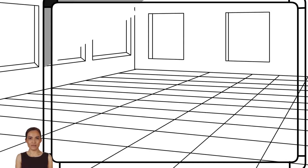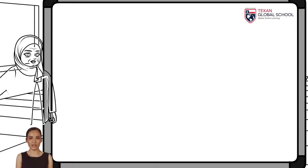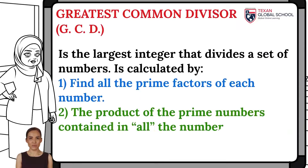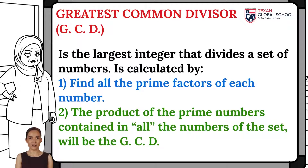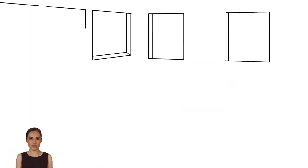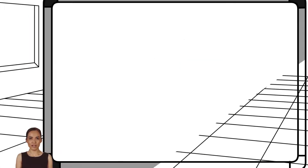The greatest common divisor is the largest integer capable of dividing a set of numbers. It is obtained by calculating the prime factors of each number. Subsequently, the product of those prime factors that are shared by all the numbers will be the greatest common divisor.